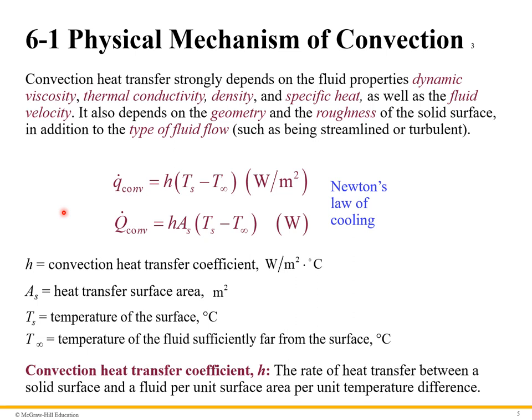What's the physical mechanism of convection? Convection strongly depends on the fluid properties: the dynamic viscosity, the thermal conductivity, the density, specific heat, as well as the fluid velocity. It's typically modeled with Newton's Law of Cooling. The first equation is the heat transfer rate per unit area. The second one is the heat transfer rate measured in watts. H is the convection heat transfer coefficient. That's generally determined experimentally. As is the heat transfer surface area. And Ts and T infinity are the temperatures of the surface and the fluid sufficiently far away from the surface.